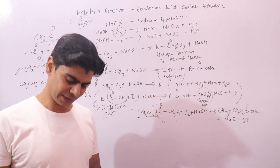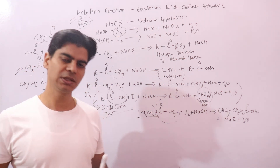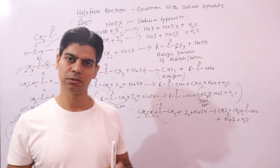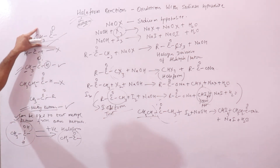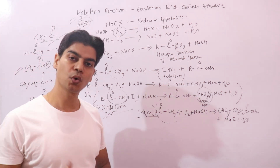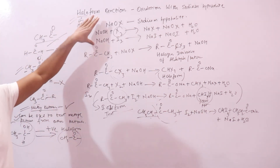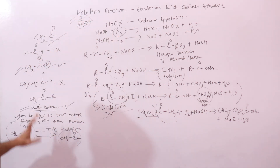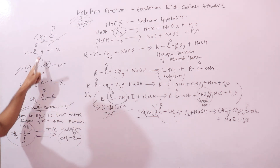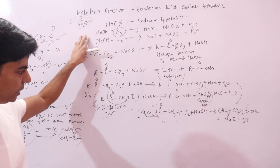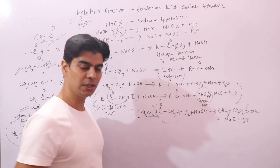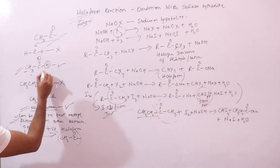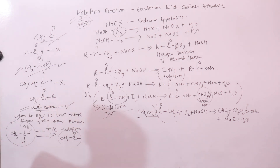To summarize: the haloform test is used to distinguish compounds that contain the CH3CO group or the CH3CHOH group. Among aldehydes and ketones specifically, all methyl ketones contain the CH3CO group and will respond to the haloform reaction, while among aldehydes only acetaldehyde responds. In the iodoform test specifically, a yellow precipitate forms only with methyl ketones, acetaldehyde, or alcohols containing the CH3CHOH group.